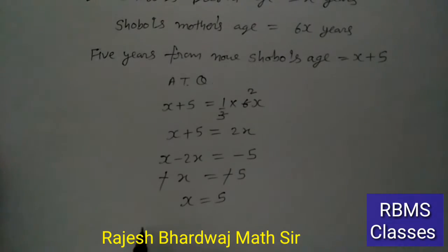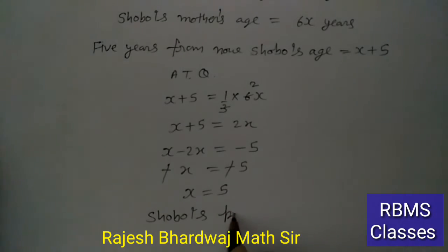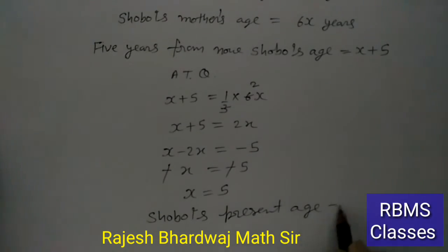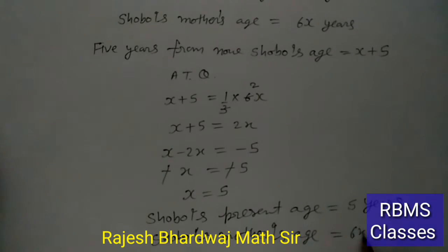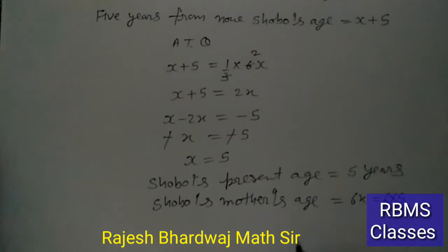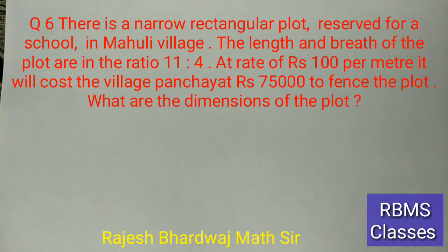हमने दोनों की present ages निकाल ली। Sobo's present age = x = 5 years। And Sobo's mother's present age = 6x = 6 × 5 = 30 years।